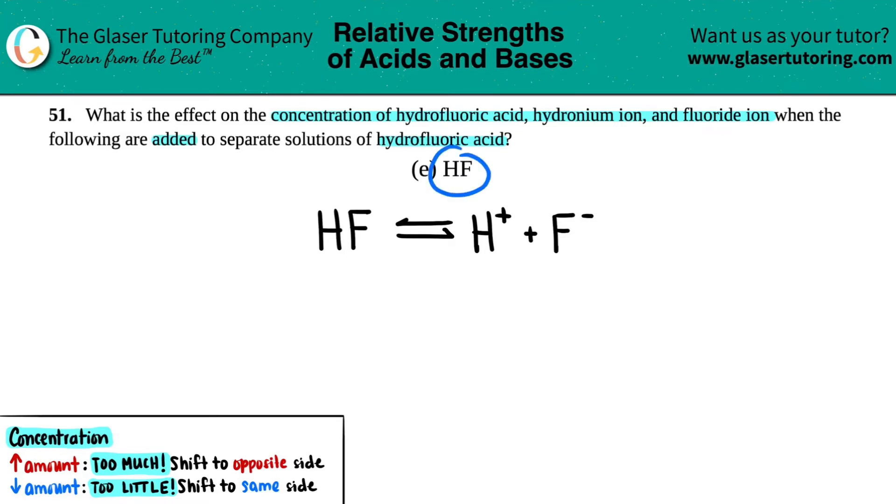We're adding HF. In this case, they gave us one answer already. If we're adding HF, that means HF has to increase. So that's one answer done. But because of that, what happens to the H+ concentration and the F- concentration?